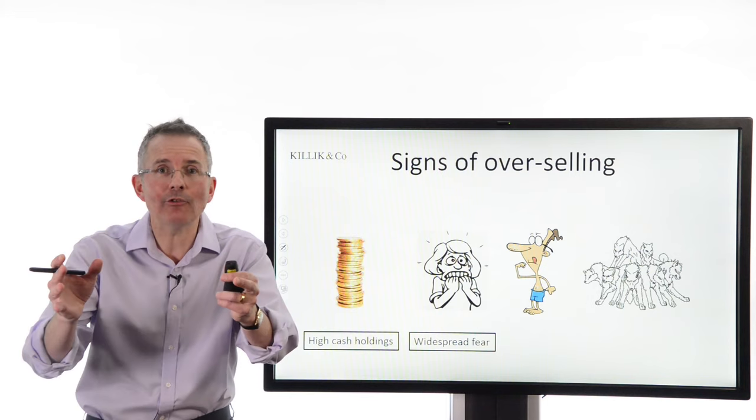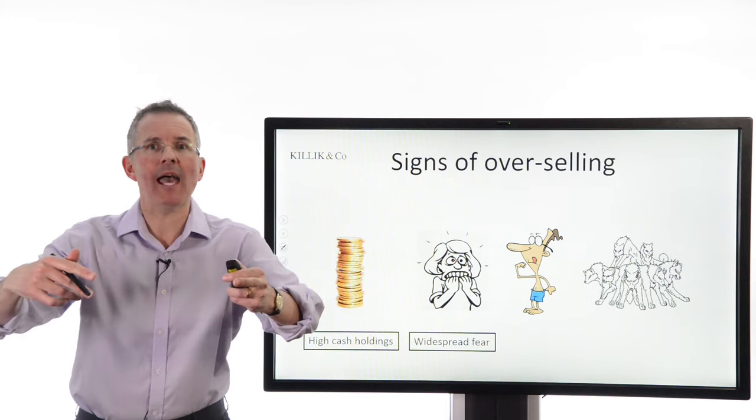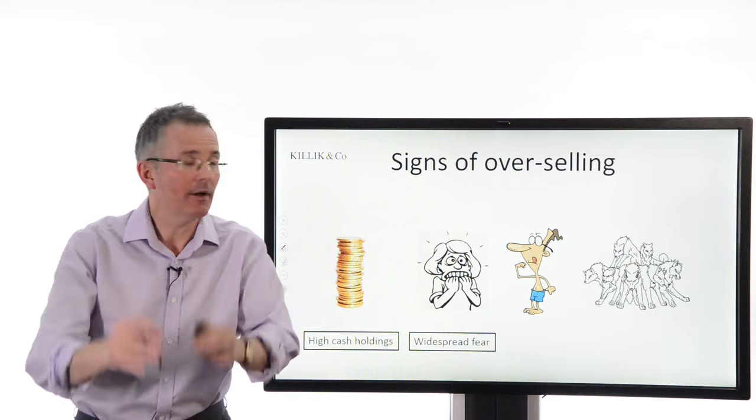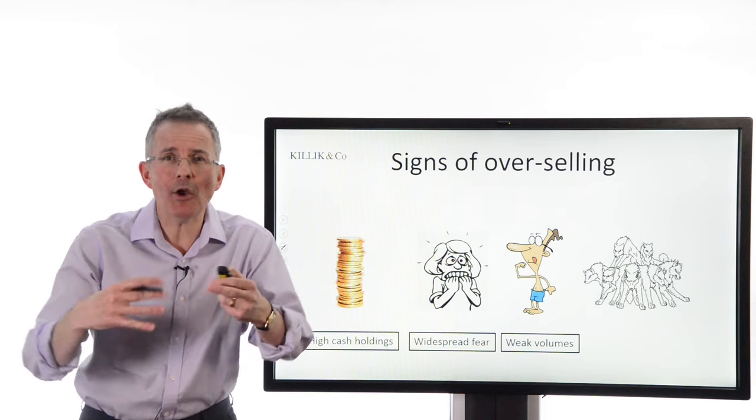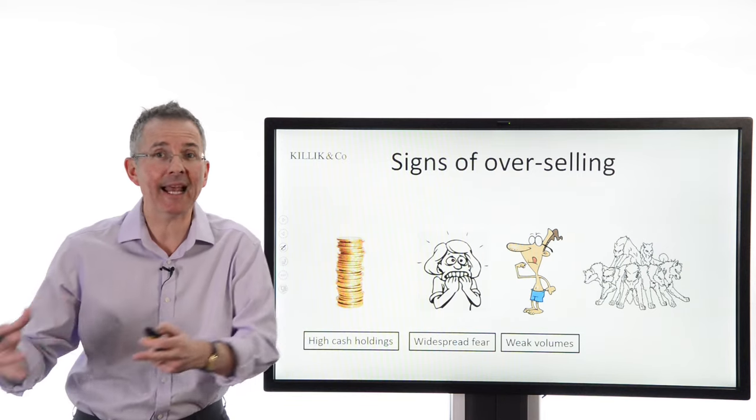Widespread fear. Look at any of those complacency measures, flip them on their head, and there you go. Widespread fear. People are worried. Number three, weak volumes. When people are worried, they don't get into the equity market. They don't trade. They get out.